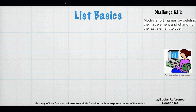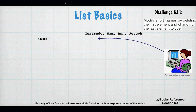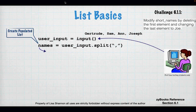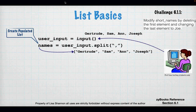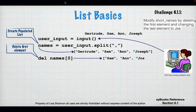Challenge 6.11: modify a list by deleting the first element and changing the last element to 'Joe'. The input is 'Gertrude, Sam, Ann, Joseph'. Splitting by a comma gives a list. We use 'del' to remove the first element — Gertrude — leaving Sam, Ann, and Joseph.